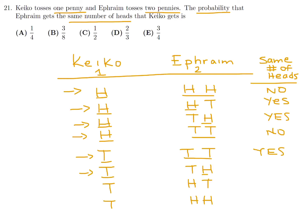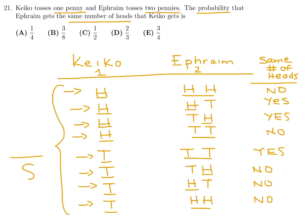Zero heads and one head — not the same. Zero heads and one head again — not the same. Zero heads and two heads — certainly not the same. So of our eight possible outcomes, how many resulted in the same number of heads? One, two, three. Three out of eight. So the answer to number 21 is B.